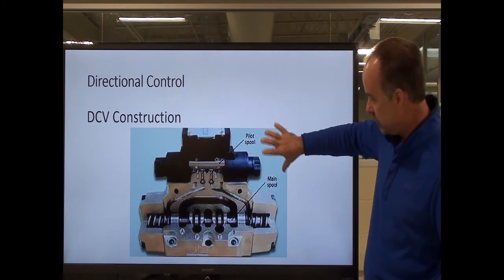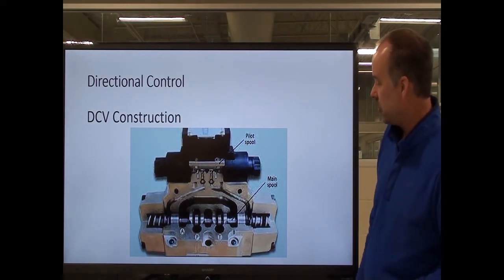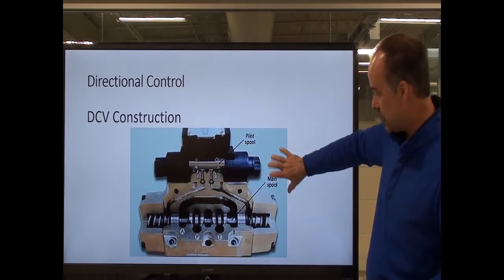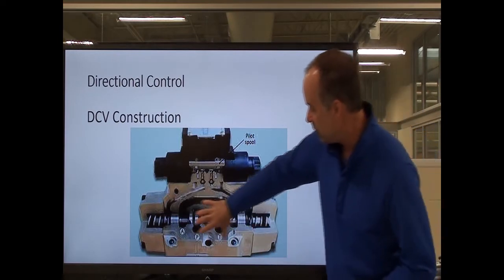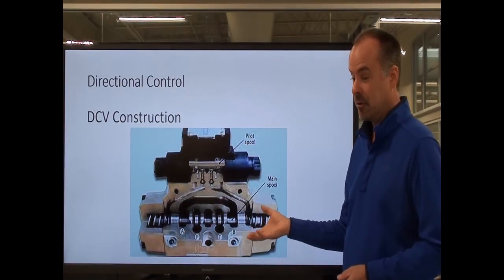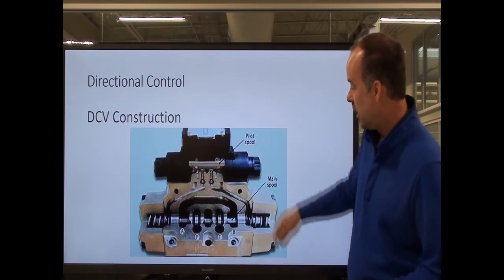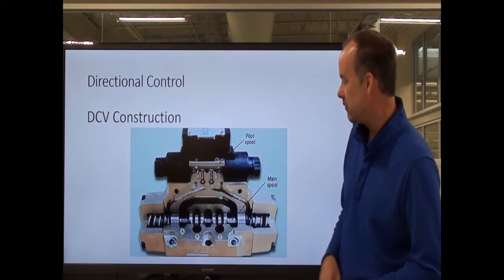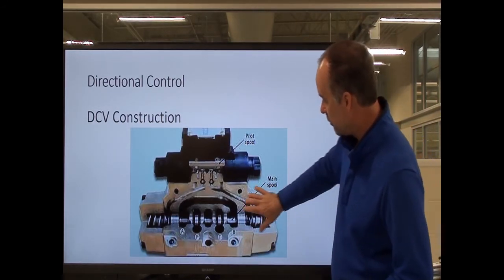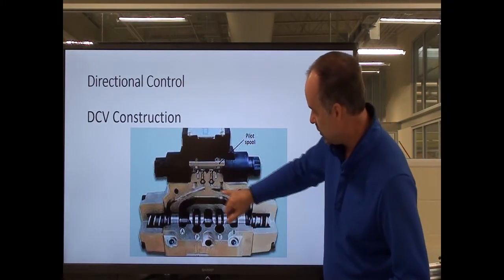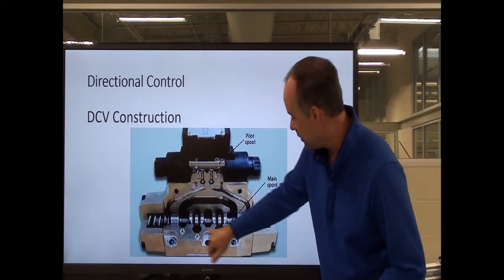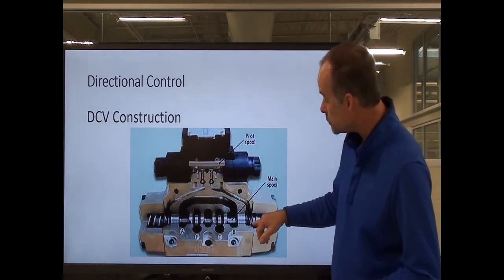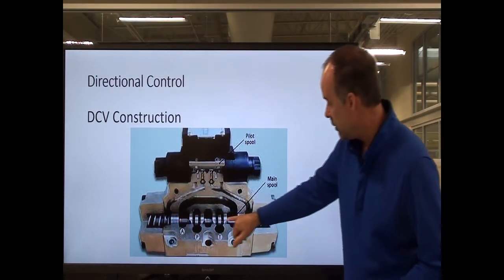Here's a cutaway view of a directional control valve. This is a pilot-operated directional control valve. Here's the main body of the valve, which would be part of the power circuit of the hydraulic circuit. Sitting on top is a pilot valve — this valve is actually controlling the main valve. Inside the valve body you can see there are different ports and different passages cut to allow fluid to flow or not flow. This part is called the spool.